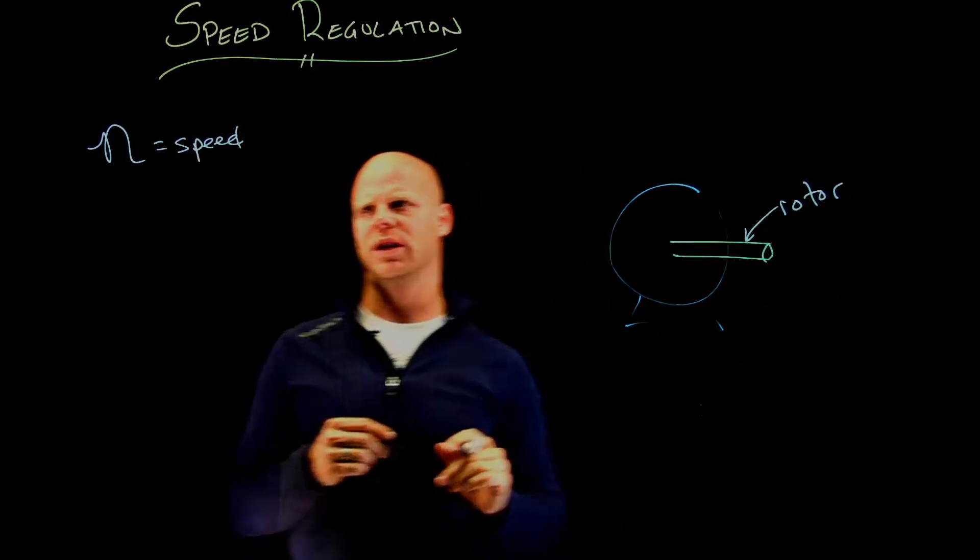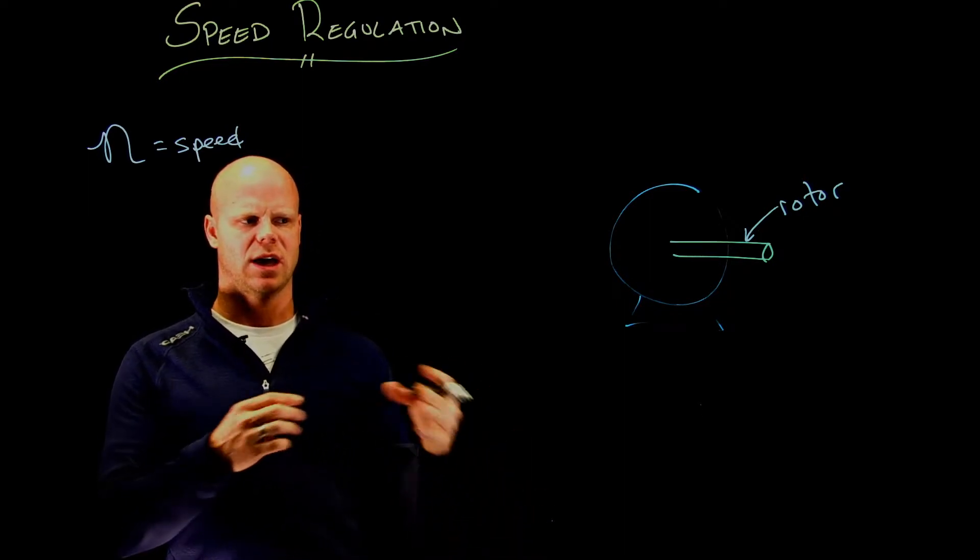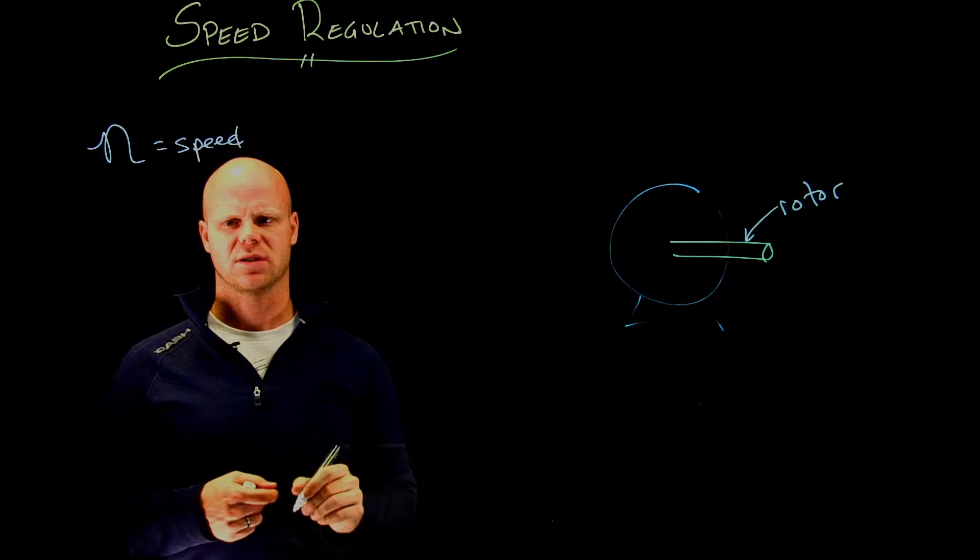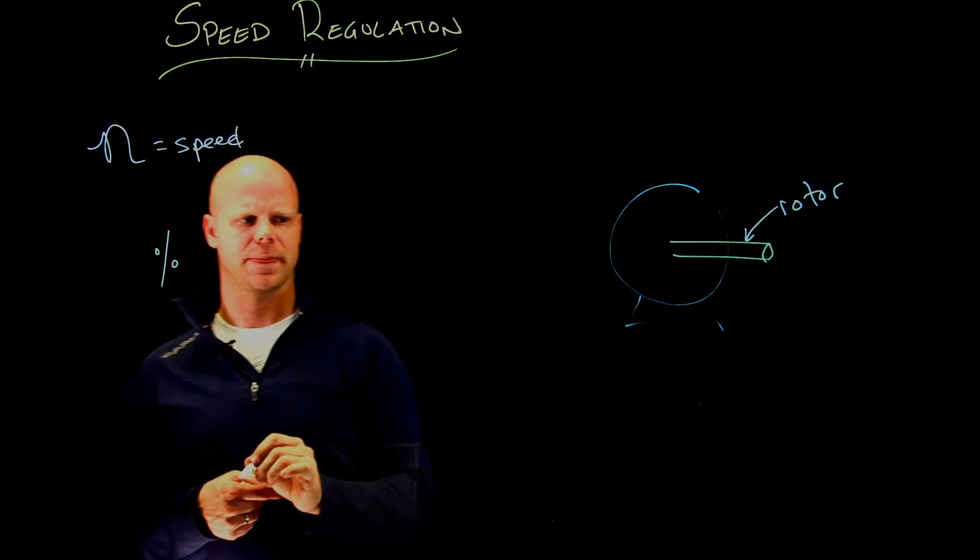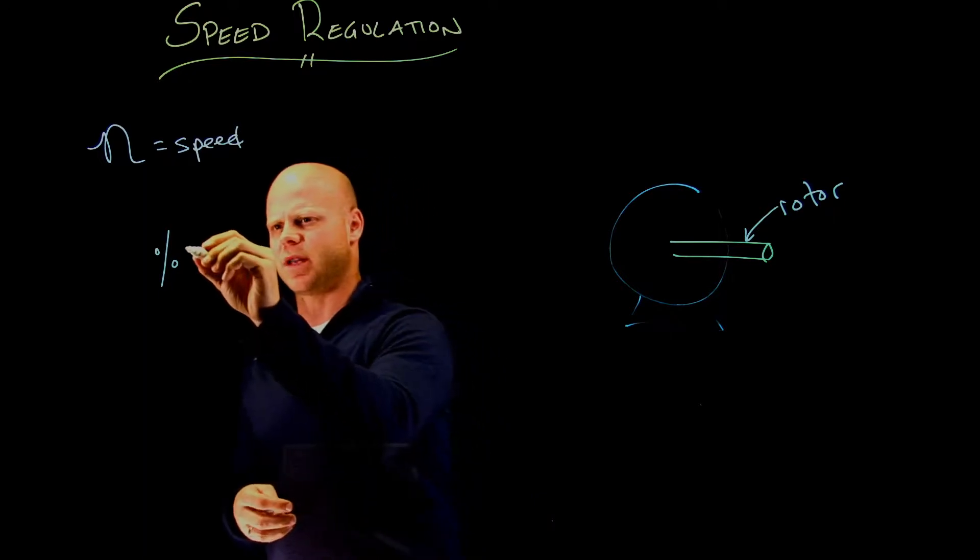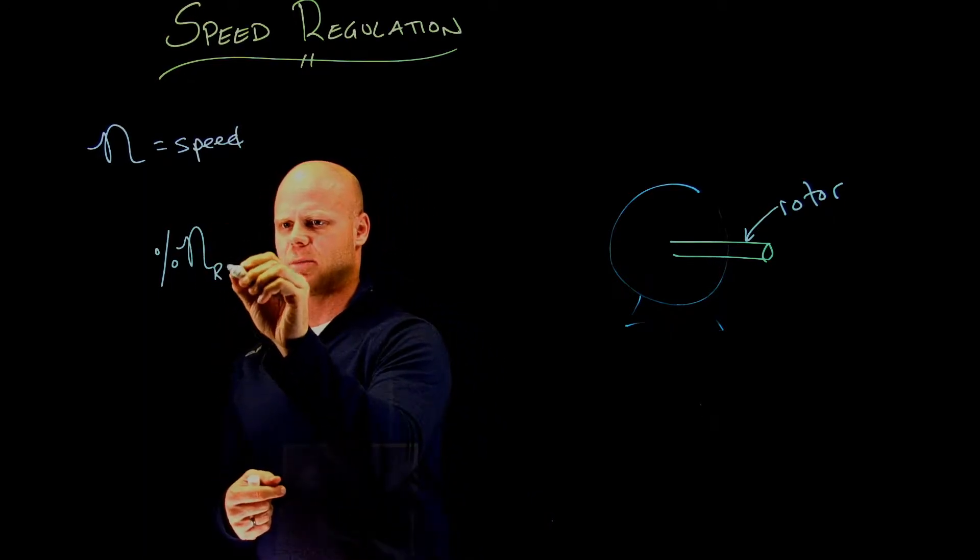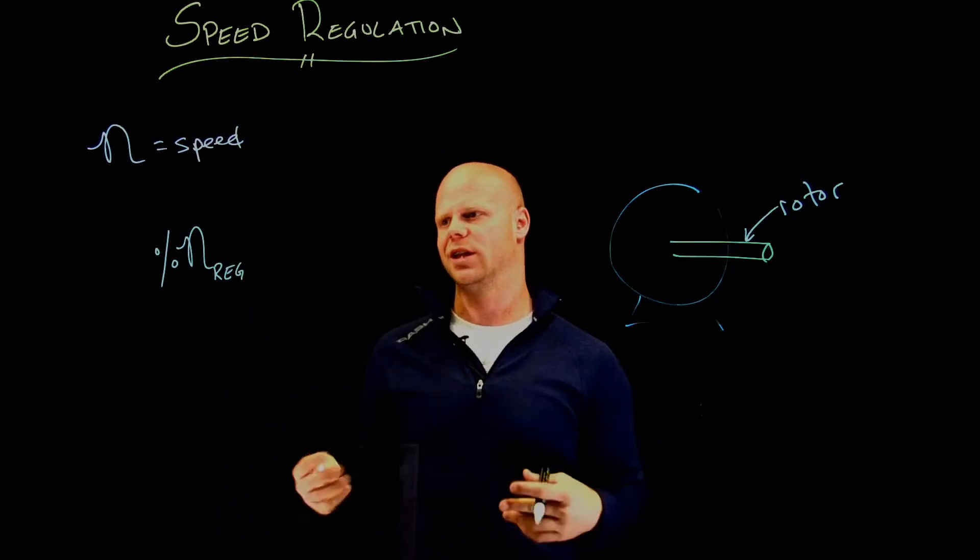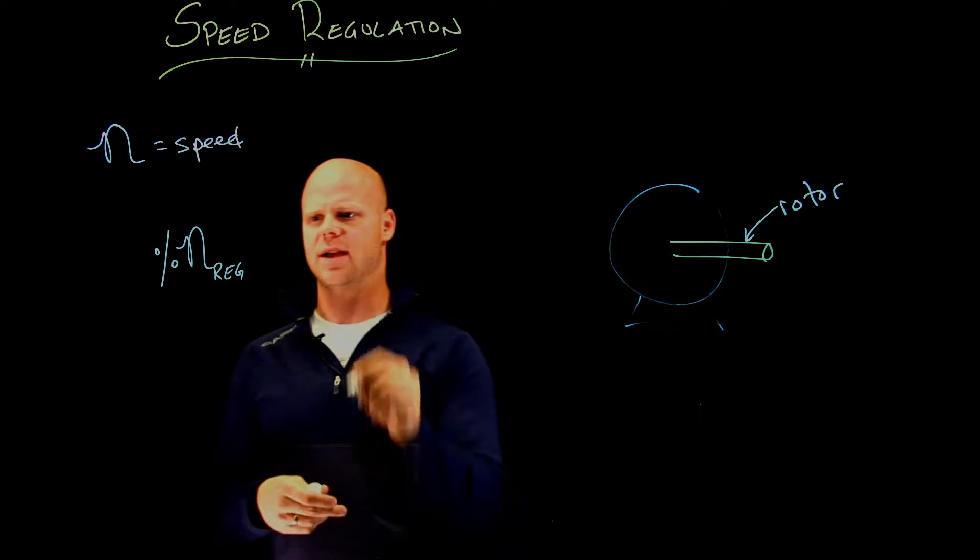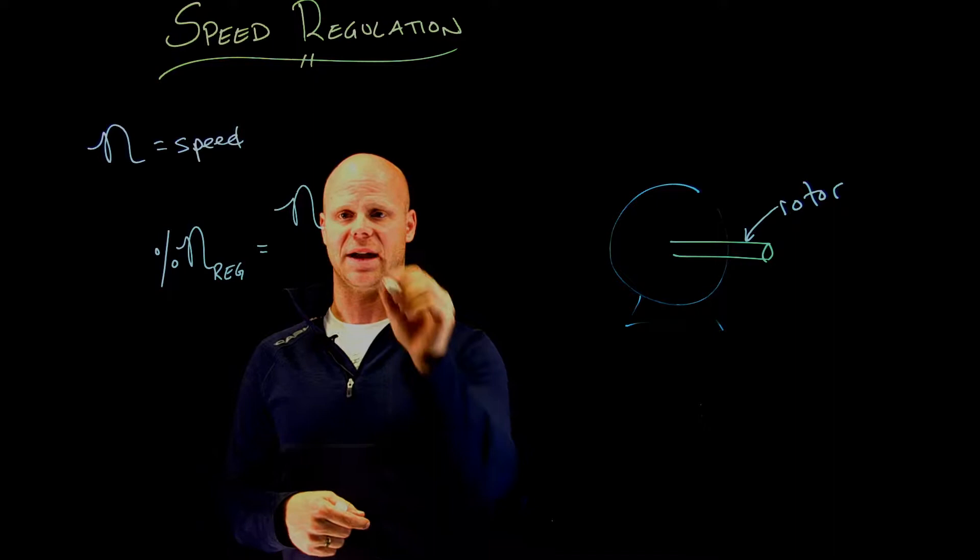I want to know what the rotor is doing between no-load speed and full-load speed and express that as a percentage. I can describe this as a formula: percent speed regulation. So percent speed reg is the speed of my motor at